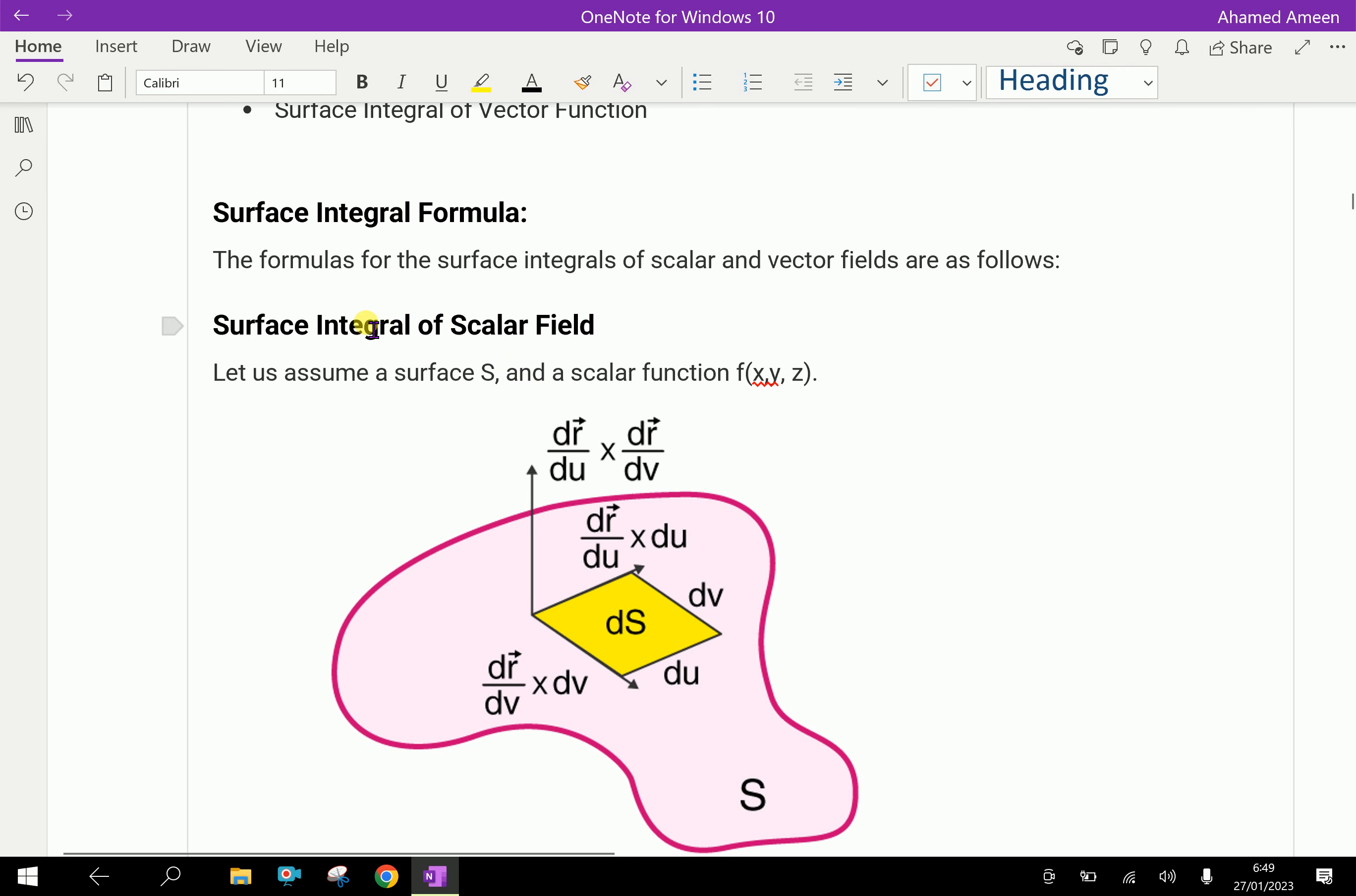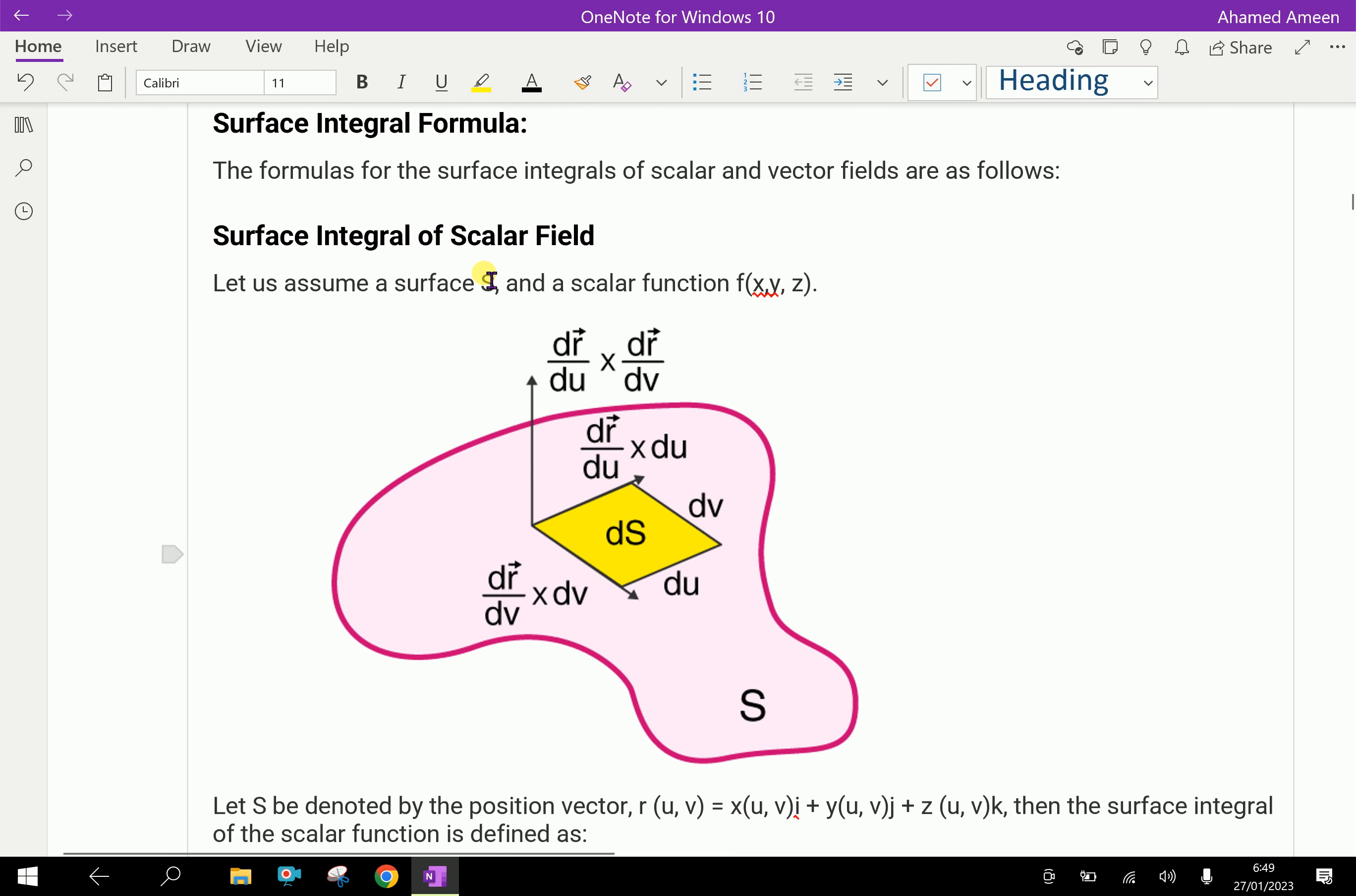Surface integral formula: The formula for the surface integral of scalar and vector fields are as follows. Surface integral of scalar field: ds is the small area. The perpendicular vector, differentiation of that one is dr vector over du cross dr vector over dv. That means the product of dr by du and dr by dv. This is dr over du times du, and dr over dv times dv. You can see dv and du form a surface S.